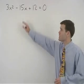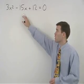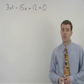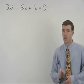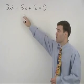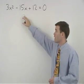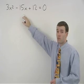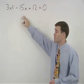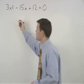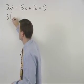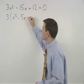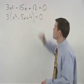In this problem, it's tempting to try to factor the trinomial as the product of two binomials right away. But notice that the three terms on the left side of the equation have a greatest common factor of 3. So our first step is to factor out a 3 from the left side to get 3 times (x squared minus 5x plus 4) equals 0.